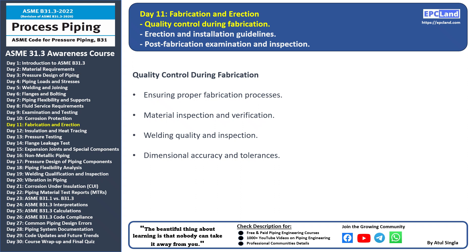We're back with another informative session of our 30-day beginner course on ASME B31.3. Today we're going to delve into a crucial topic: quality control during fabrication. Quality control during fabrication is essential to ensure that the piping system is built to the highest standards. Key point — proper fabrication processes: it's crucial to follow approved fabrication procedures to ensure the integrity of the piping system, including cutting, bending, and joining processes. Material inspection and verification: ensuring that the materials used meet the required specifications is vital.